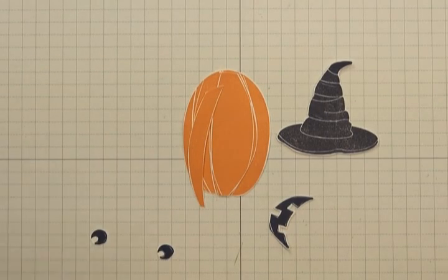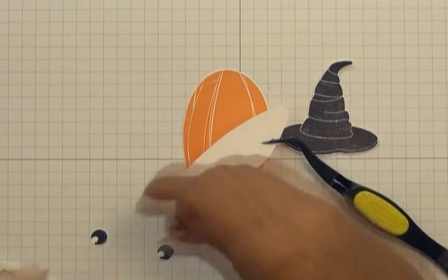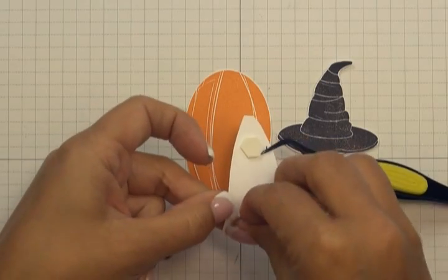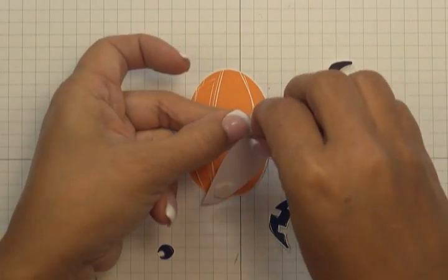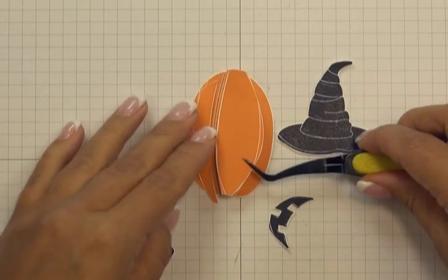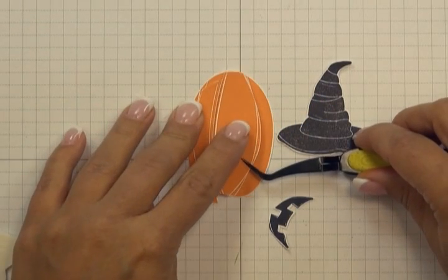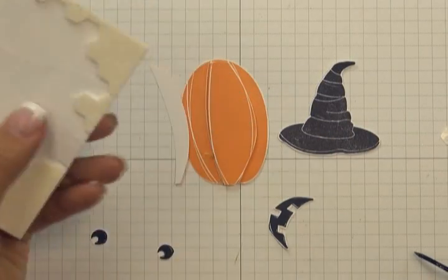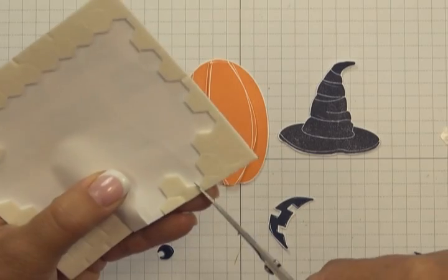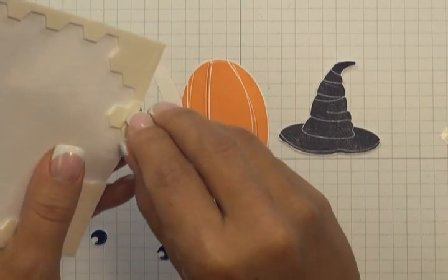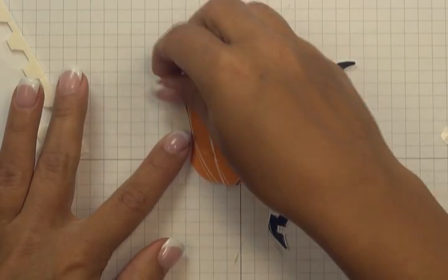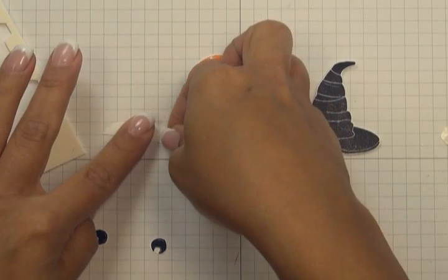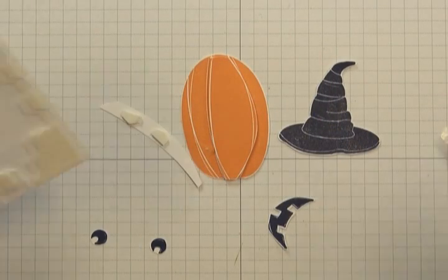Now to give the pumpkin some dimension, I'm going to be attaching these pieces using Stampin' Dimensionals. So I'm going to attach first one piece. And then I'm going to snip the ends and stick that on this piece. And that just gives me a little bit narrower piece.